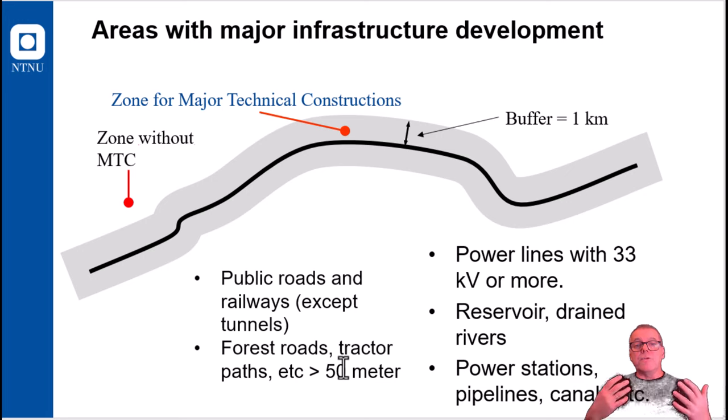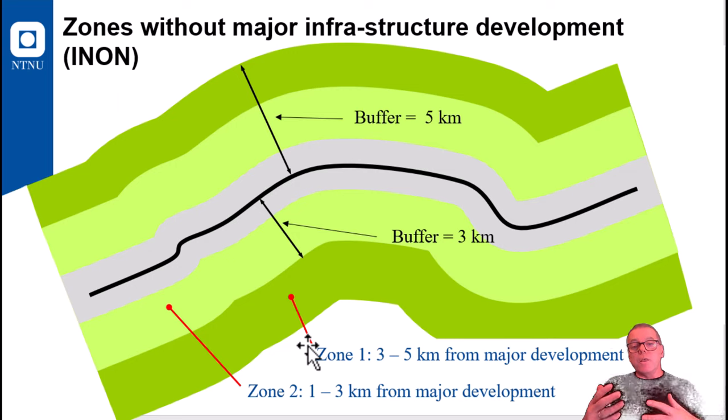And they take one kilometer buffers away from these major technical constructions. Then they do two other buffers of three kilometers and five kilometers distance, and then creating two zones, one zone close to the major infrastructure development which is one to three kilometers, and the one being further away from the major development.